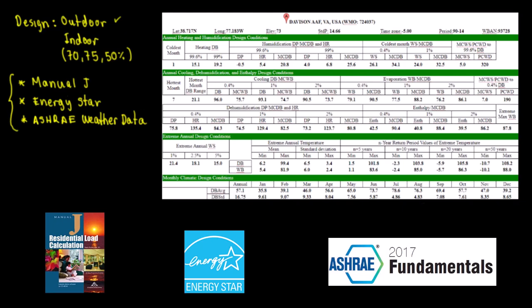What you see on the right is extracted from ASHRAE Fundamentals — I'll put the link in the description below. In the second part of the video we'll see where to obtain this data for free online. As you can see there are many different numbers, but to simplify this you only need Temperature 1 and Temperature 2. That's why this is HVAC Easy Math.